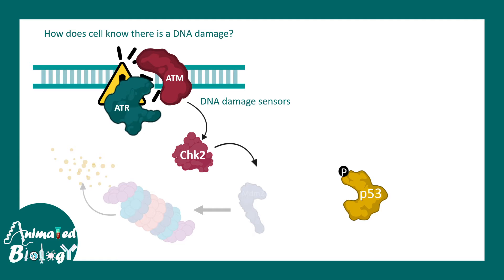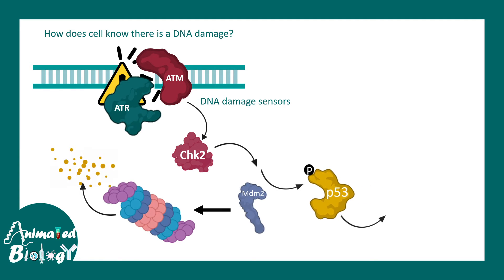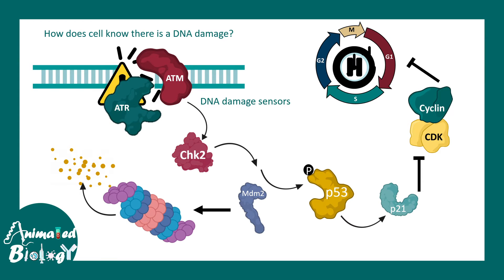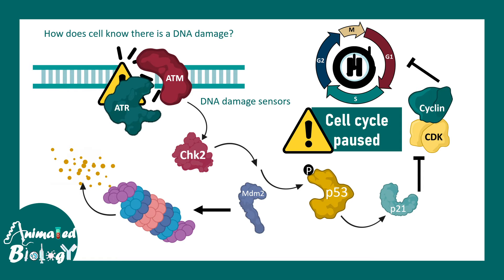When p53 persists in the cells, it can do many things. p53 can activate p21, ultimately leading to inhibition of the cyclin-CDK complex. p21 is also known as a CKI, or cyclin-dependent kinase inhibitor. When cyclin-CDK complexes are inhibited, cell cycle progression is halted. This is how DNA damage information is relayed to p53 and how p53 acts at a molecular level to pause the cell cycle. The consequence is a cell cycle pause.